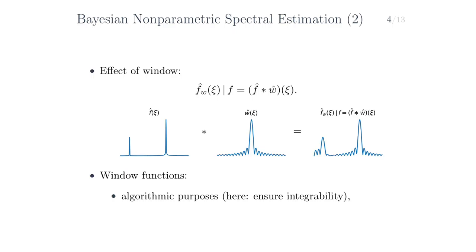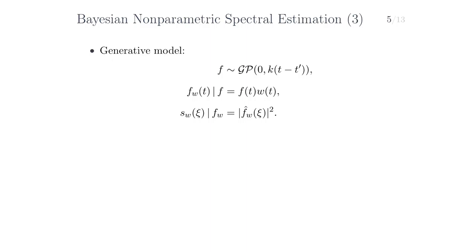The use of window functions is very commonplace in signal processing. They can either be used for algorithmic purposes — for example, in this case, we use them to ensure integrability of our signal — or they can arise as a consequence of acquisition devices. For example, in practice, we can only observe a signal for a finite amount of time, which means that in some sense we always have some kind of rectangular, perhaps very wide but finitely wide, window function. And sampling is often modeled by a window function that is an impulse train, which is often denoted by the Shah symbol.